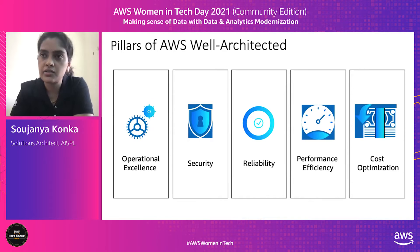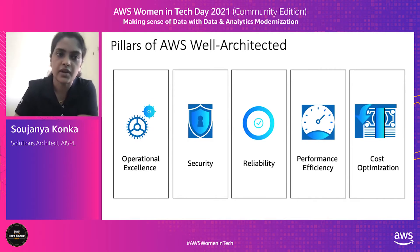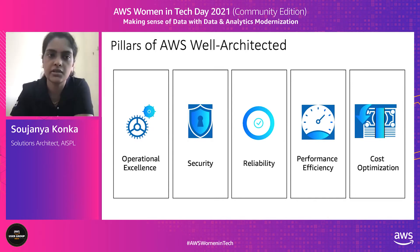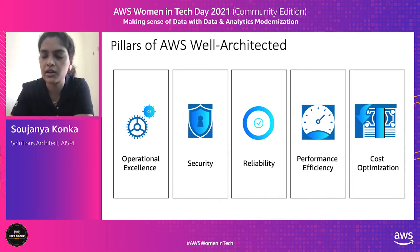The Well-Architected Framework, commonly known as WAR, is a questionnaire available on the AWS console with 52 questions covering five pillars: operational excellence, security, reliability, performance efficiency, and cost optimization. It's normally suggested for customers building their applications on cloud to do a half-yearly or quarterly review of their application, or whenever they go live with a new set of applications, to ensure they are adhering to the guidelines stated by these five pillars. Incorporating these five pillars will help you produce stable and efficient systems, allowing you to focus on your functional requirements.